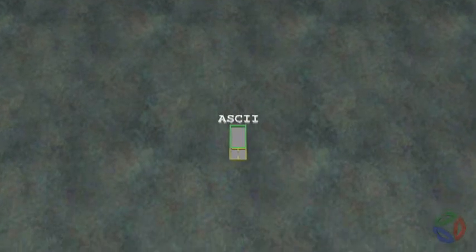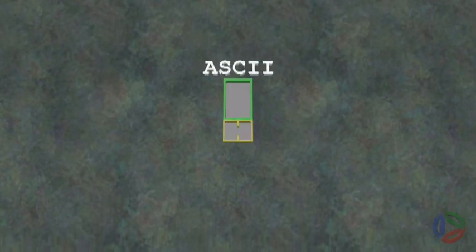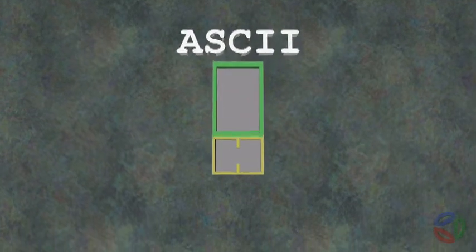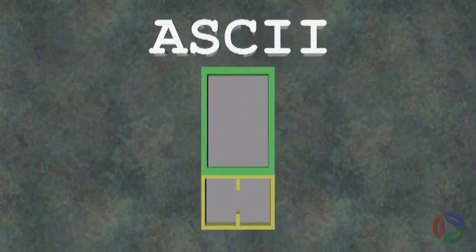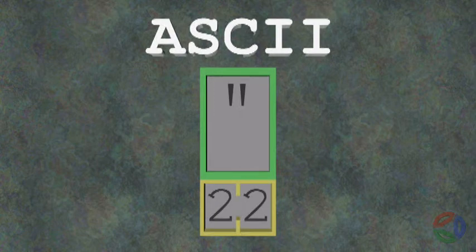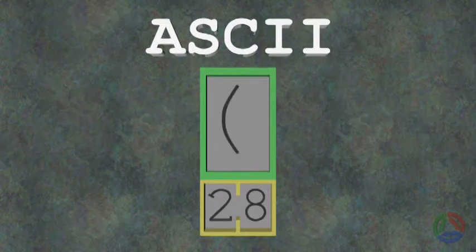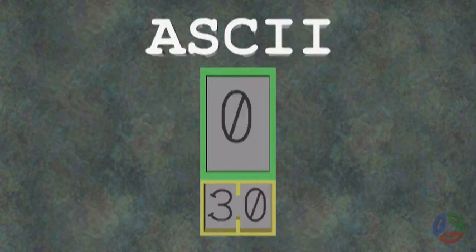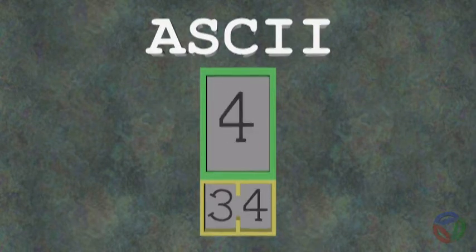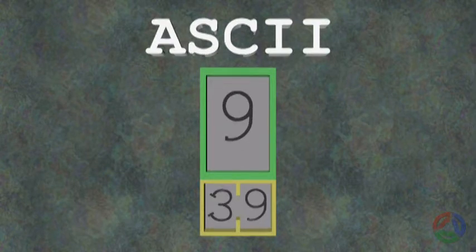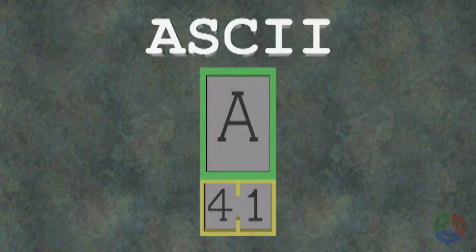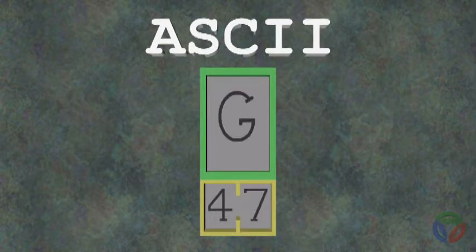During the days of ASCII text files, the byte order used by different computer architectures for in-memory storage of text was not an issue because each text character required only one byte. However, with larger character sets being developed, such as Unicode, one byte is not enough to have more than 256 characters. When using more than one byte to store a character code, byte order becomes a problem because of the two primary ways computers store their multibyte values in memory.